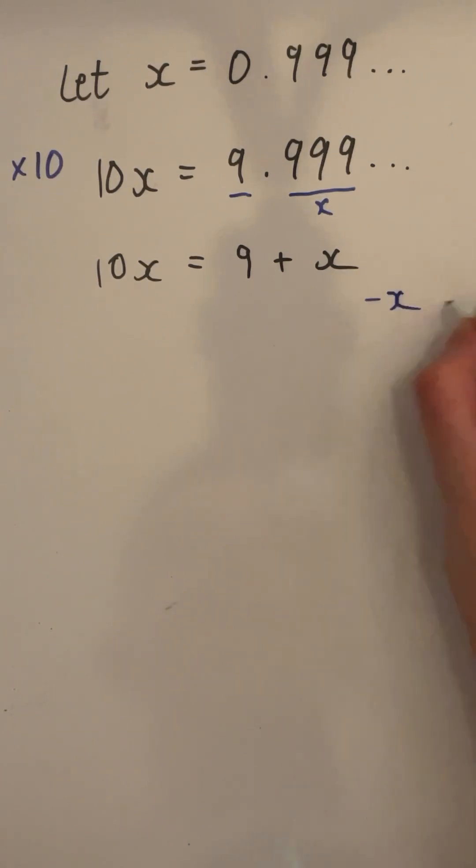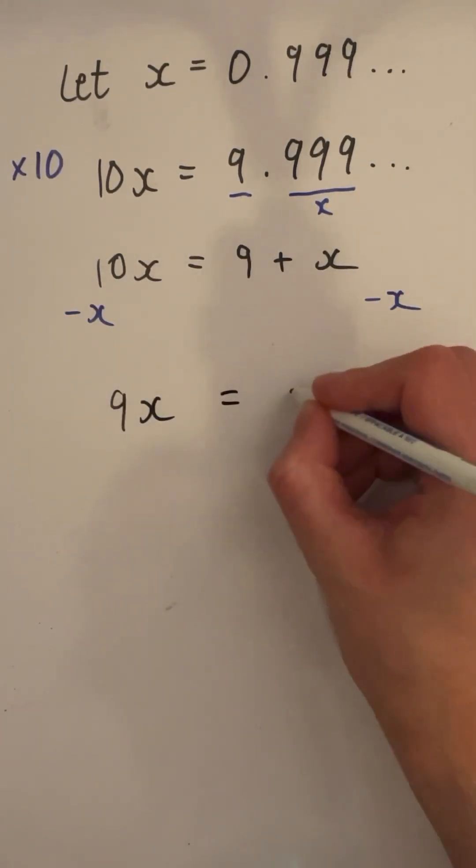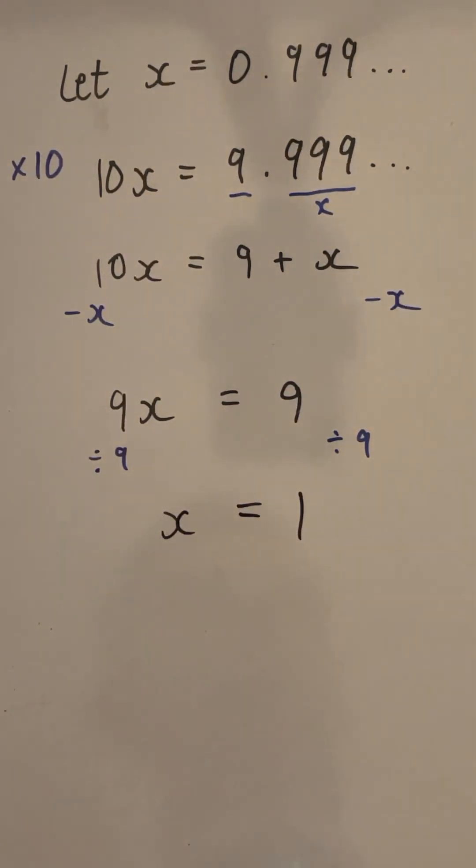Now, subtract x from both sides. We get 9x is equal to 9 and then divide by 9. We get x is equal to 1. What has gone on here?